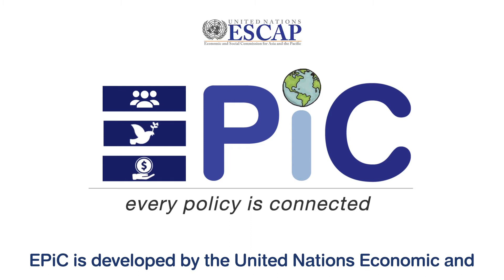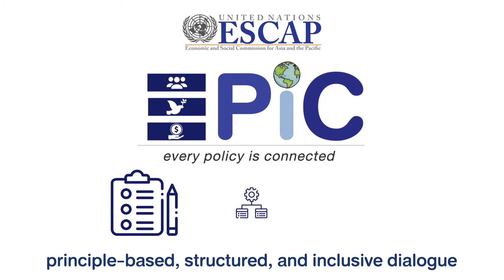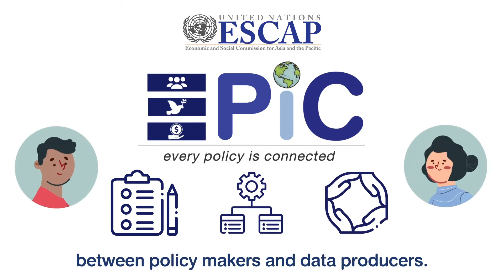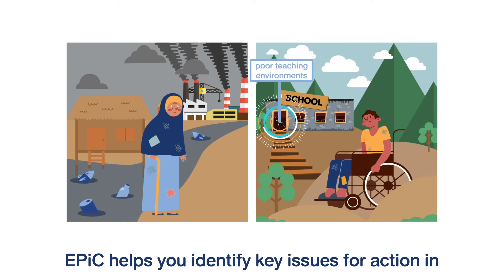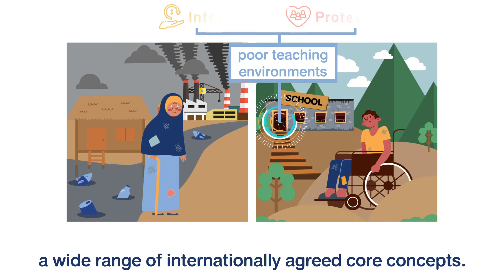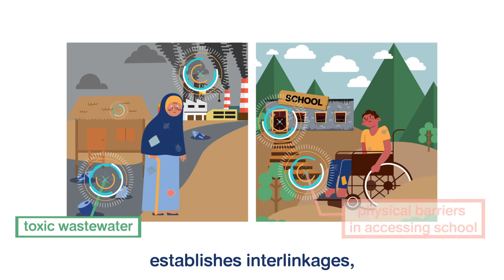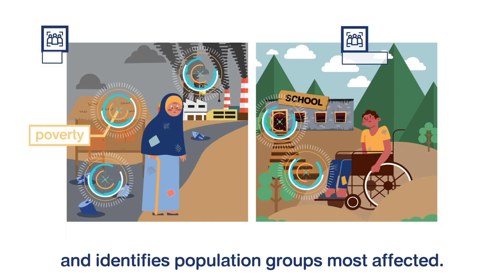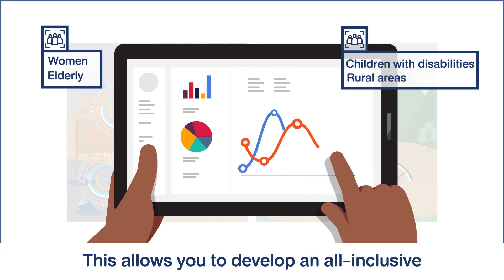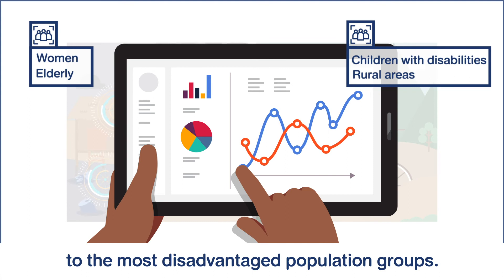EPIC is developed by the United Nations Economic and Social Commission for Asia and the Pacific to facilitate principle-based, structured and inclusive dialogue between policy makers and data producers. EPIC helps you identify key issues for action in your policy document and map them to a wide range of internationally agreed core concepts. EPIC breaks down the complexities of policy issues, establishes interlinkages and identifies population groups most affected. This allows you to develop an all-inclusive indicator framework paying particular attention to the most disadvantaged population groups.